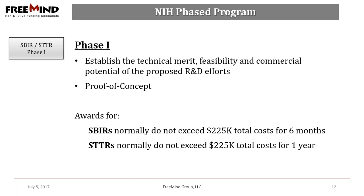The SBIR and STTR programs are available from many government agencies including NIH, NSF, DOD, and others. Approximately $900 million go to NIH SBIR and STTR awardees every year. The NIH SBIR and STTR programs are structured in three phases.